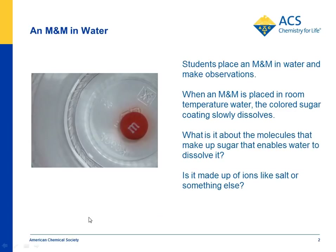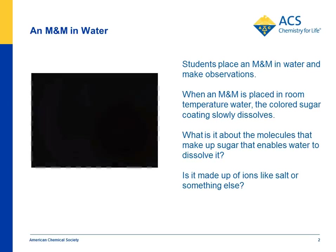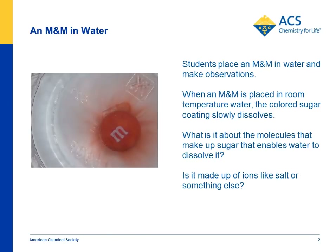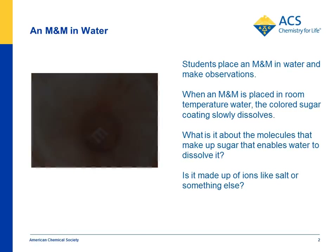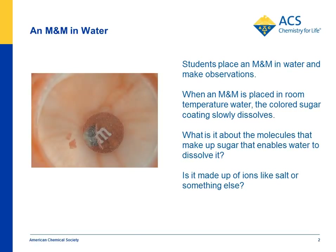Students begin by placing an M&M in water and watching what happens. It doesn't take long — if you put an M&M in a cup of room temperature water so that it covers the entire M&M, in a short period of time the coloring and the sugar come off the M&M, and you're left with just the chocolate part. You can see it's exposed right here.